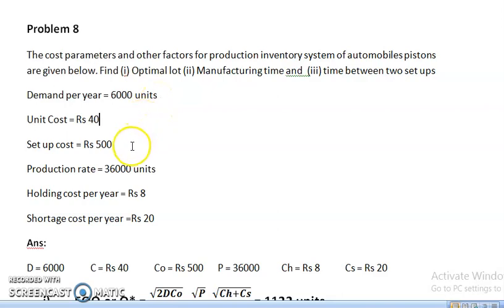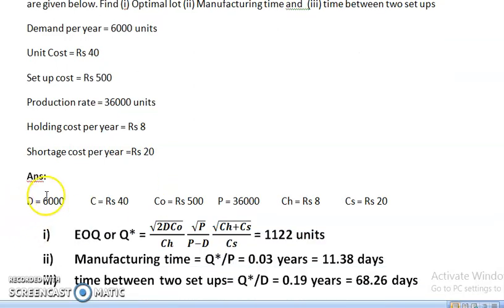The information is: demand per year 6,000 units, unit cost Rs 40, setup cost Rs 500, production rate 36,000 units, holding cost per year Rs 8, and shortage cost Rs 20. All are written with the symbols D=6000, C=40, CO=500, P=36000, CH=8, and CS=20.